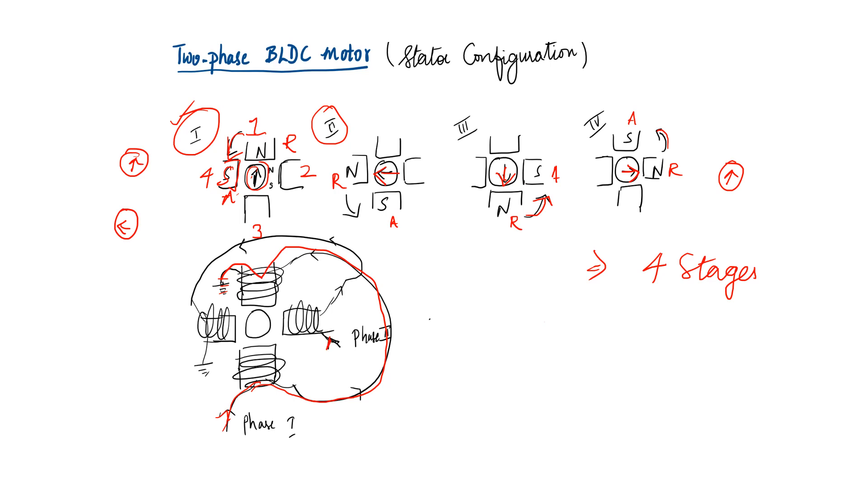So similarly, here the second phase travels, the current goes through the windings of the stator number two and passes and goes to ground to the stator number four. Similarly, the vice versa configuration can also be done.